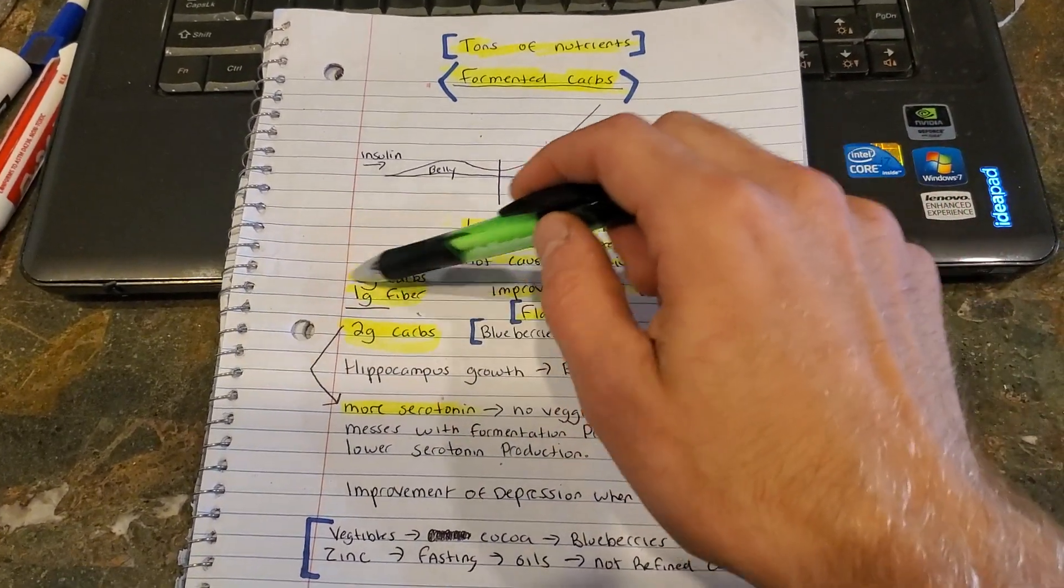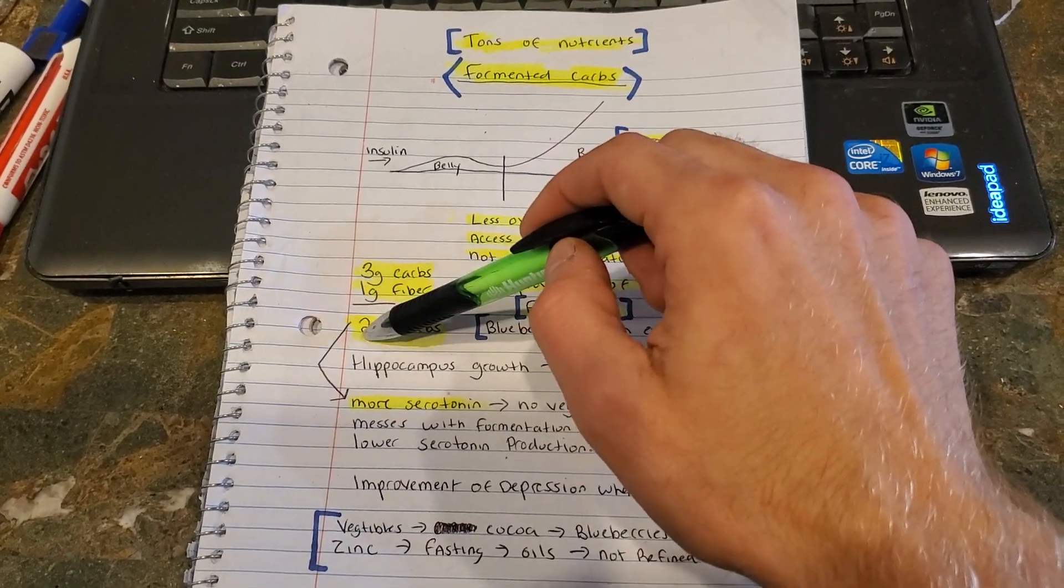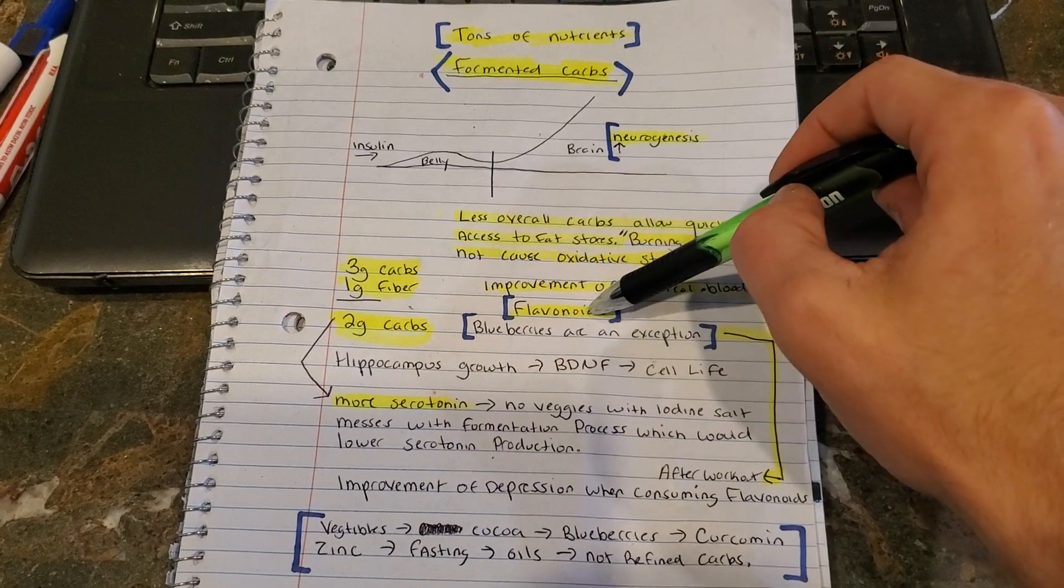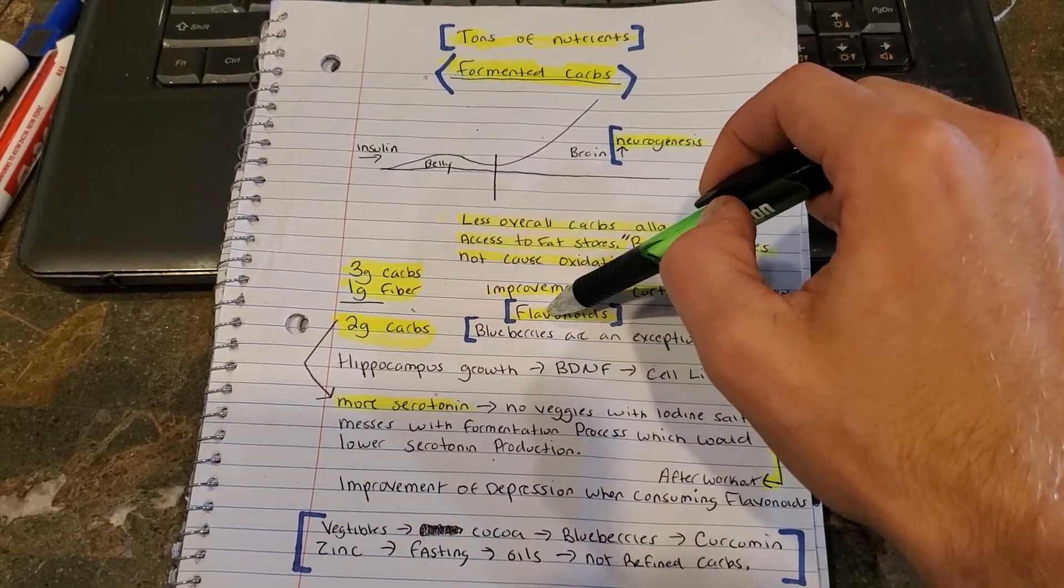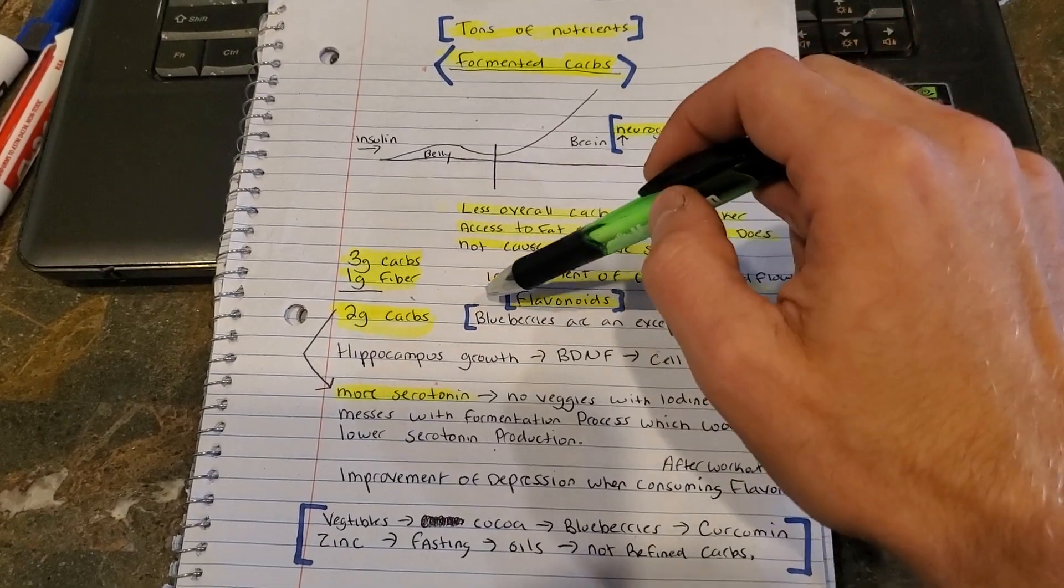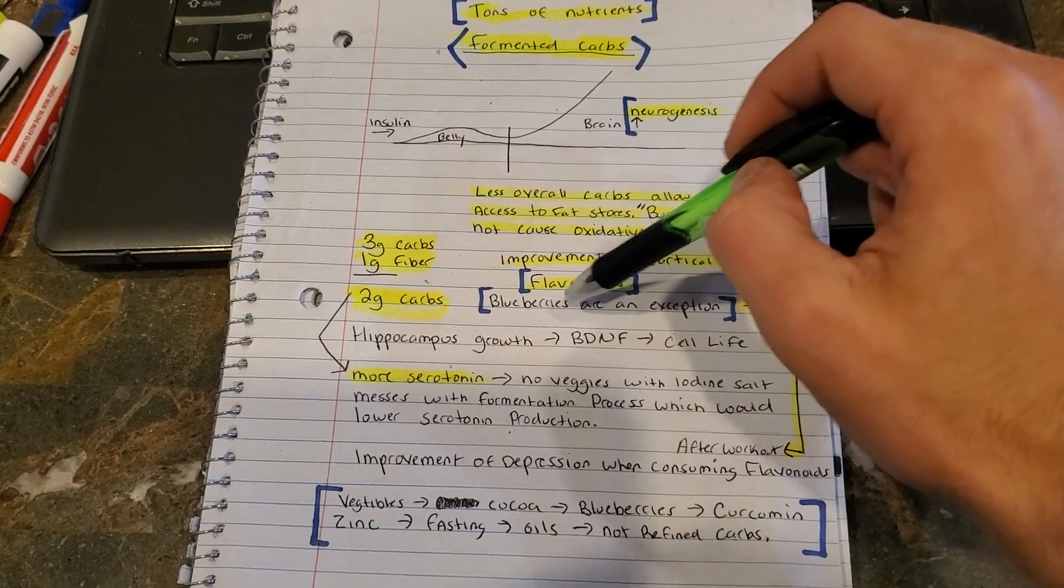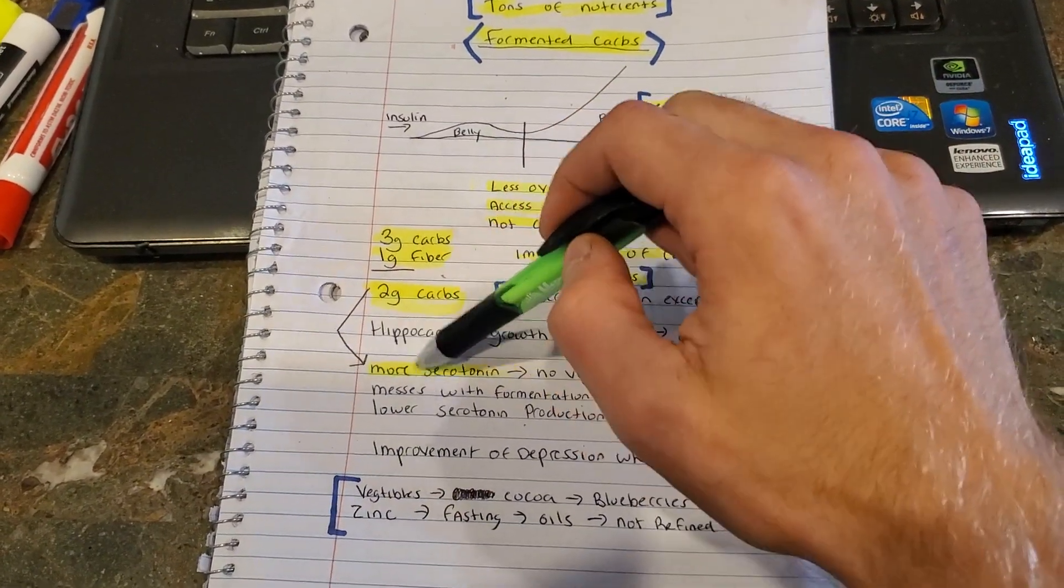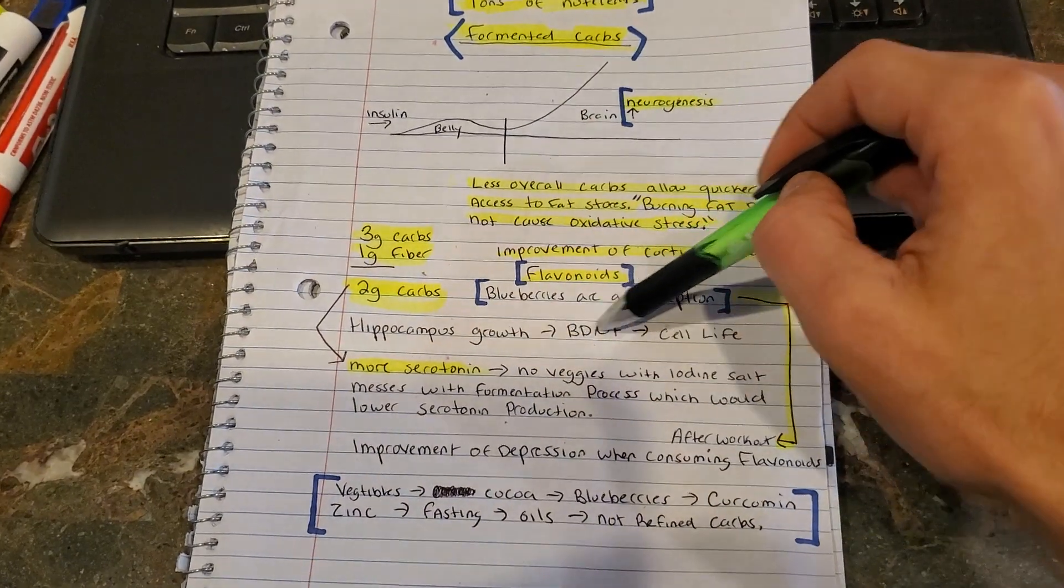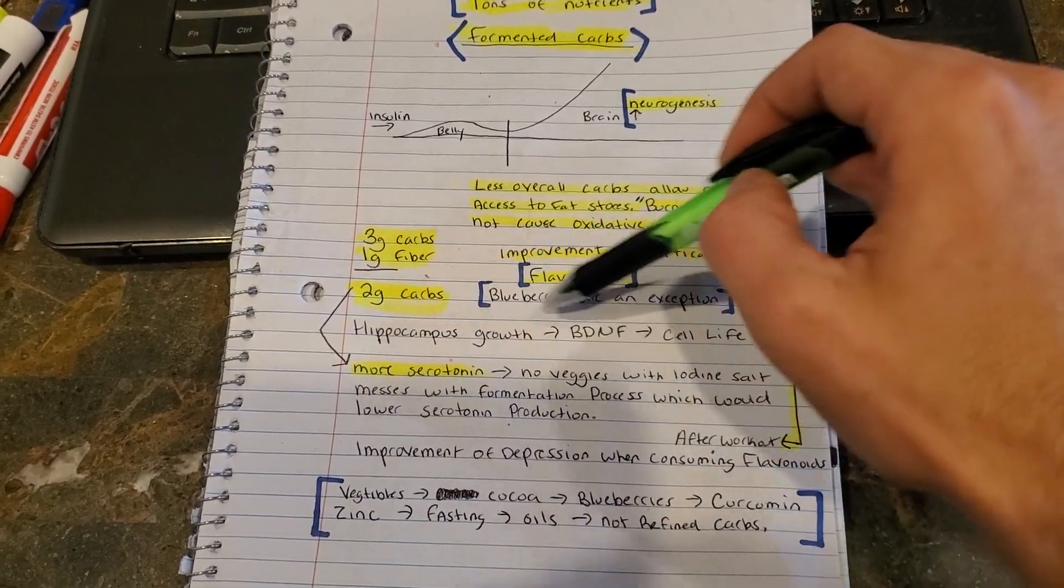So less overall carbs allows faster access to your fats, and burning fat does not cause oxidative stress as much as your refined carbs and sugars. This is an example of a fermentable carb. Three grams of carbs, one gram of dietary fiber. That's two carbs overall. So certain things you can eat right after you work out or after a fast because your body is sensitive to insulin at that point, and it's not going to go ahead and block fat burning. It's going to be used as fuel.